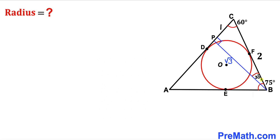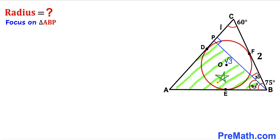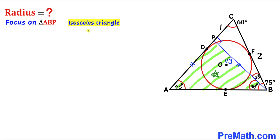Now, the whole angle ABC is 75 degrees and angle PBC is 30 degrees, so angle ABP must be 75 − 30 = 45 degrees. Focusing on triangle ABP: angle BPA is 90 degrees, angle ABP is 45 degrees, so angle BAP is also 45 degrees. Since both base angles are 45 degrees, triangle ABP is isosceles, meaning AP = BP = √3.